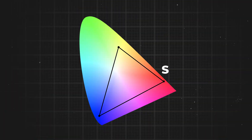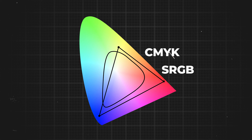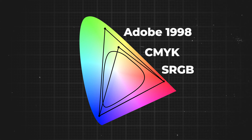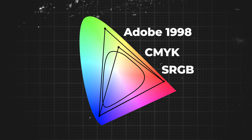AdobeRGB is around about 35% larger than sRGB. If you have a look at this diagram, you can see how sRGB doesn't cover the full range of colours that CMYK offers, but AdobeRGB does. Meaning the colours that you see on screen when you're using AdobeRGB are going to look roughly the same when you go ahead and print them. But it isn't just as simple as AdobeRGB is better.